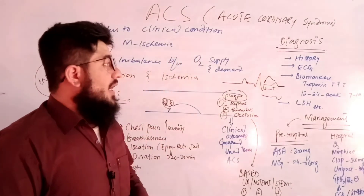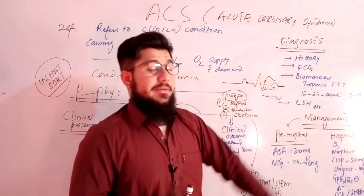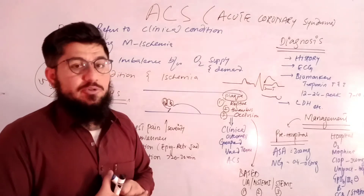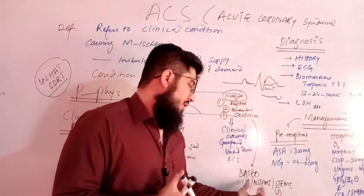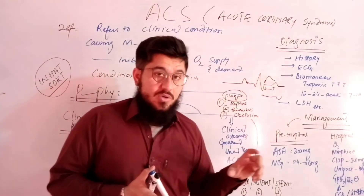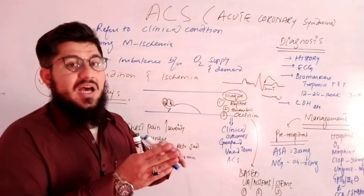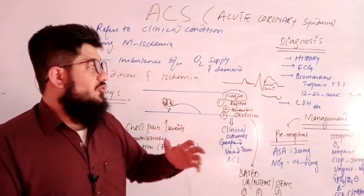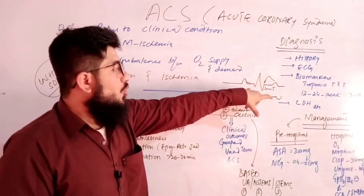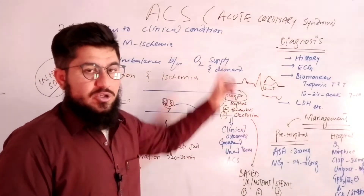The next diagnostic step is biomarkers, specifically troponin T and I. Sometimes in unstable angina and NSTEMI, the ECG appears normalized — because the damage is not severe and the patient has partially recovered. In those cases, biomarkers allow us to identify what type of ACS is present.